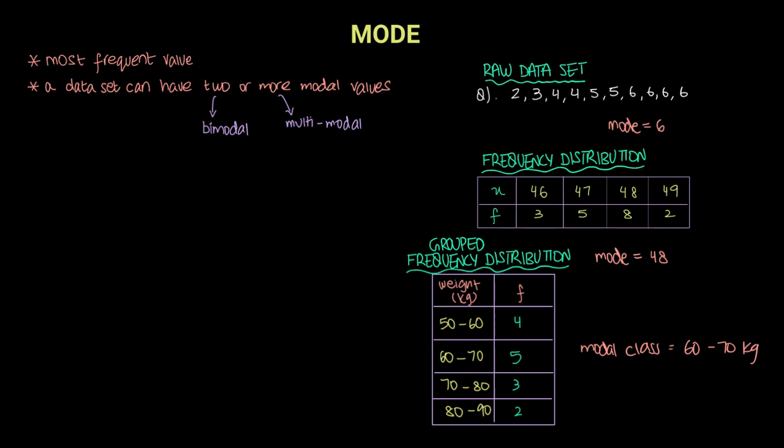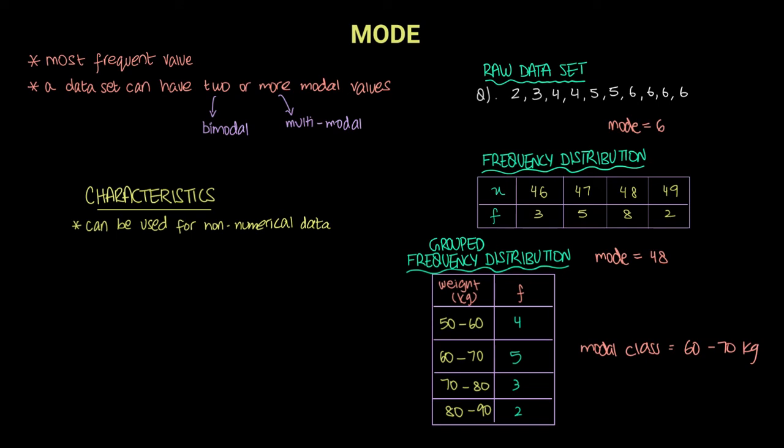One of the main characteristics of mode is that it can be used for non-numerical data. Let's say you are looking at the grades of a class of students: A grades, B grades, C grades, and so on. You can easily find the mode by seeing which grade occurs the most. If there are a majority of Bs in the class, the modal grade is B.